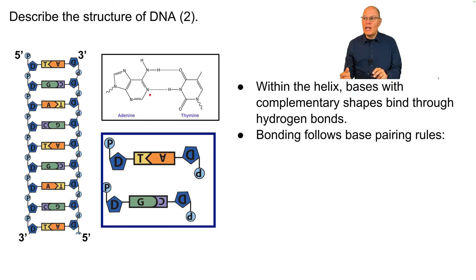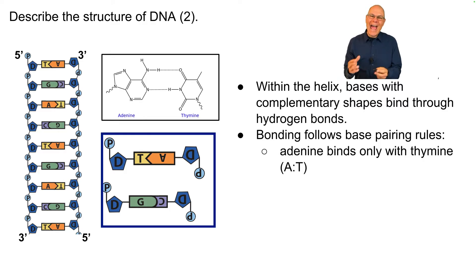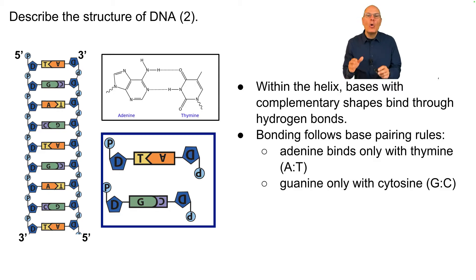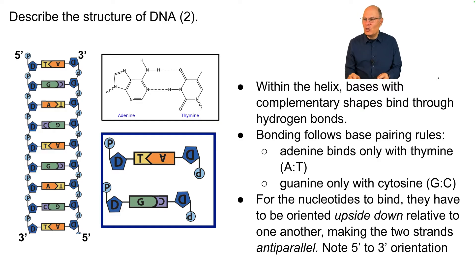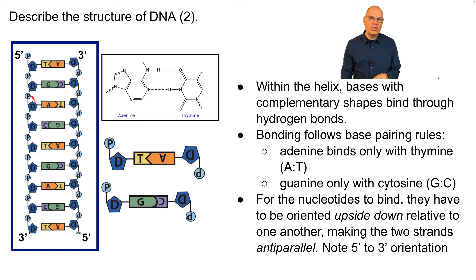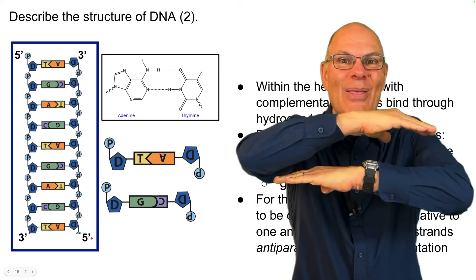The bonding follows base pairing rules that you have to commit to memory. Adenine binds only with thymine — A binds with T. Guanine binds only with cytosine — G binds with C. For the nucleotides to bind, they have to be oriented upside down relative to one another, making the two strands anti-parallel. This strand has its five-prime end at the top and its three-prime end at the bottom, and the other strand is the opposite — anti-parallel.